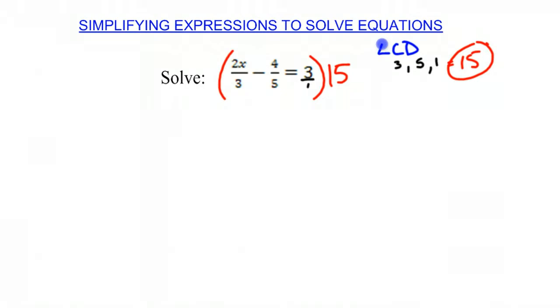So therefore, we have 2x times 15 divided by 3 minus 4 times 15 divided by 5 equals 3 times 15 over 1. And then what we're going to do is we're going to simplify the expressions before we multiply it out just to make our jobs a little bit easier. So 15 and 3 are cancelled out. You're left with 5. 15 and 5 cancel out. You're left with 3. And then 1 just kind of cancels itself out because you don't need to say that you're dividing by 1.